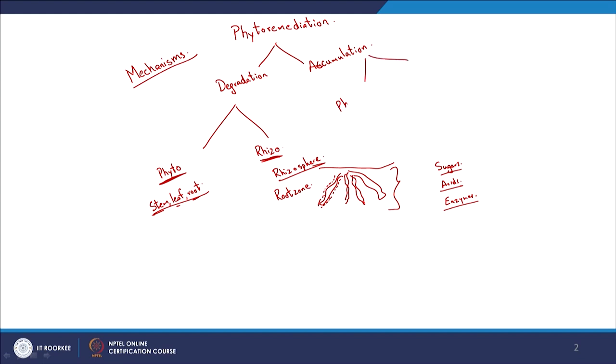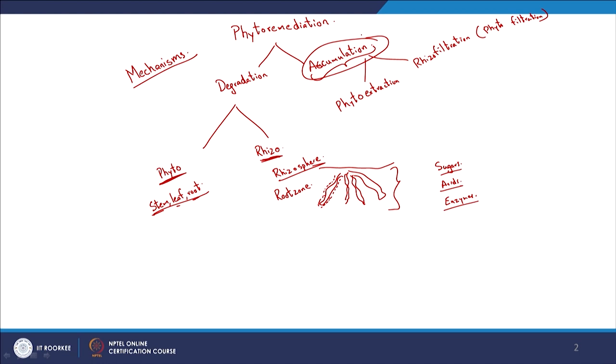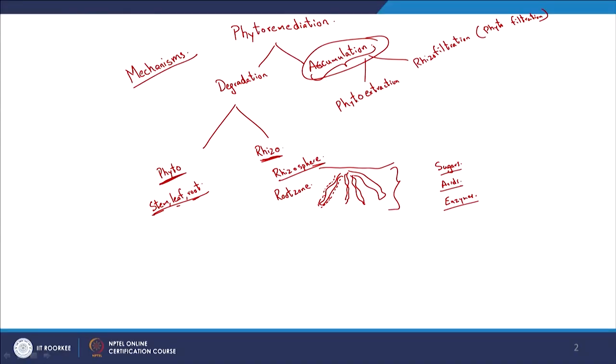Moving on to accumulation, we have phytoextraction and rhizofiltration or phytofiltration. In accumulation, the compound is not being degraded but is being accumulated. If pollutant is dispersed throughout at toxic concentrations, accumulating it all in one particular location can limit the relevant toxic effects. So we are going to look at phytoextraction in this context.